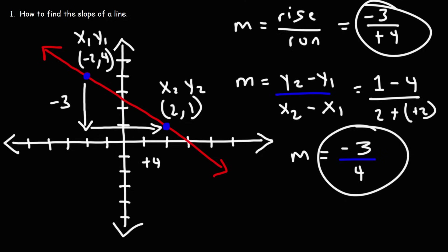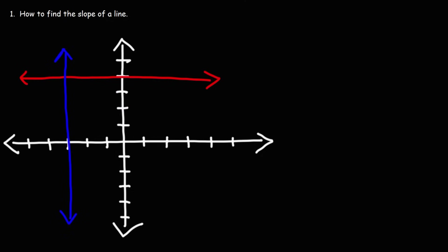Try this one: find the slope of the two lines in the graph — the red line and the blue line. The red line is a horizontal line and the slope of any horizontal line is always zero. The blue line is a vertical line and the slope of any vertical line is undefined.